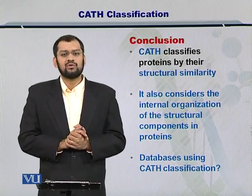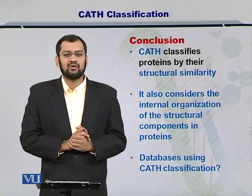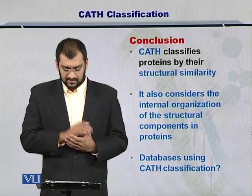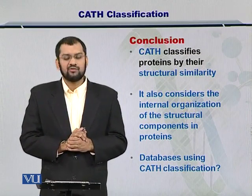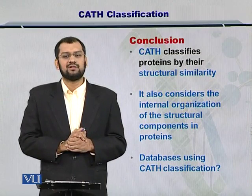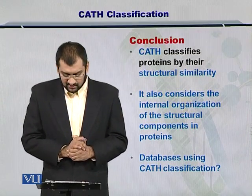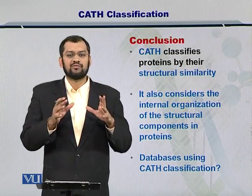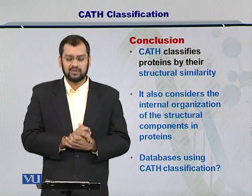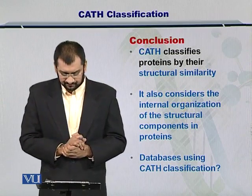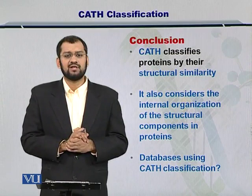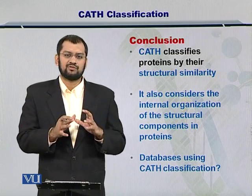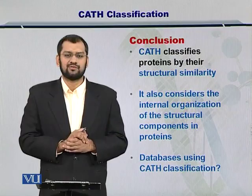In conclusion, CATH — Class, Architecture, Topology, and Homology — classifies proteins by their structural similarity, considering the internal organization of secondary structures within the proteins. You can essentially have databases of protein structures based on such a classification.